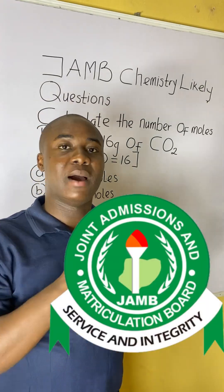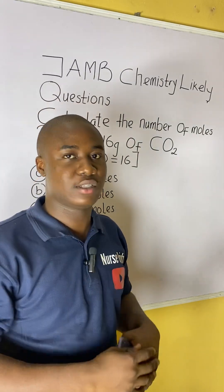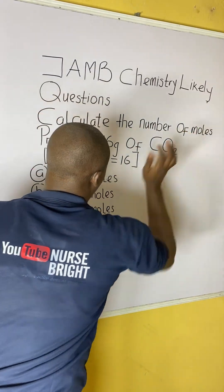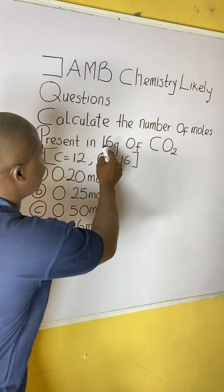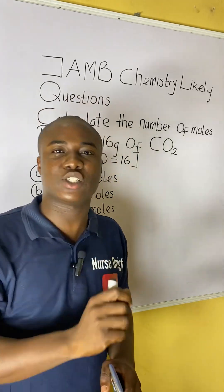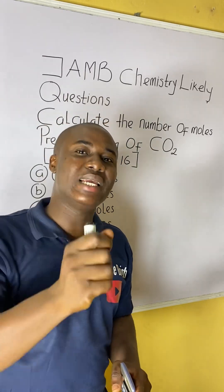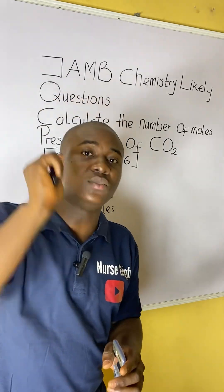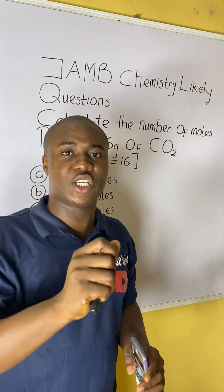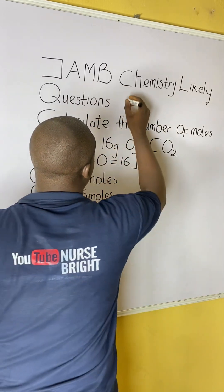Let's say you are writing the JAMB exam and you came across this question — how will you solve it? It is very easy. Let's solve it together. The question says: calculate the number of moles present in 16 grams of CO₂. This question is extremely easy. Before we go ahead to solve any question in chemistry, it is important to understand the topic that the question is from. From the look of things, this question is on a very important aspect in chemistry.